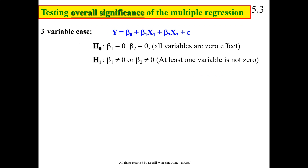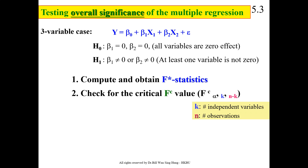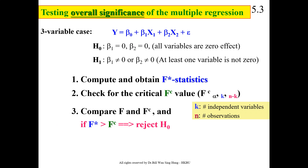In the three-variable case, y is the dependent variable and x1 and x2 are explanatory variables. The null hypothesis is that both beta 1 and beta 2 are equal to zero, and the alternative is that at least one variable is not zero. We compute the F statistic and check the critical value, where alpha is the level of significance, k is the number of independent variables, and n is the number of observations. If the computed F value is greater than the critical F, we reject the null hypothesis and conclude that beta 1 and beta 2 are not equal to zero.